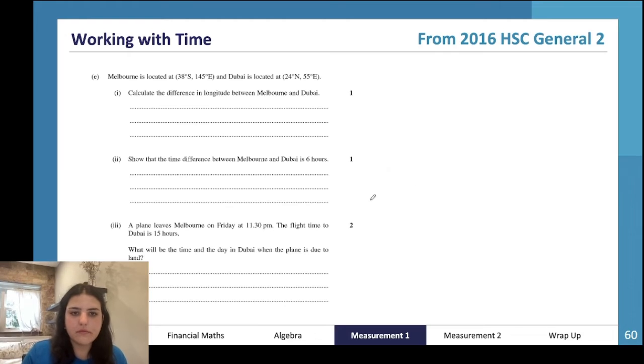Let's do this 2016 HSC General 2 question. Melbourne is located at 38° South 145° East, Dubai is located at 24° North 55° East. What is the difference in longitude between Melbourne and Dubai? Longitude is these numbers east and east, so we've got 145 minus 55, which is 90. So our difference in longitude is 90 degrees. The time difference is 6 hours: 90 times 4 is 360, and if we divide 360 by 60, we get 6 hours.